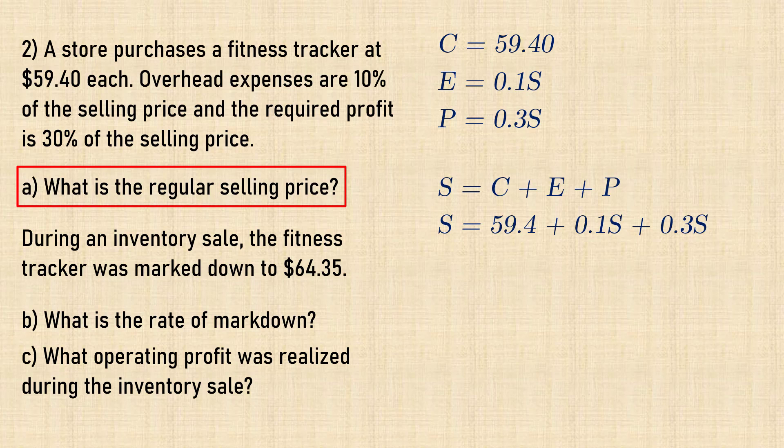Starting again with selling price equals cost plus expenses plus profit, we have S equals 59.4 plus 0.1S plus 0.3S. Adding the 0.1S and the 0.3S gives 0.4S.